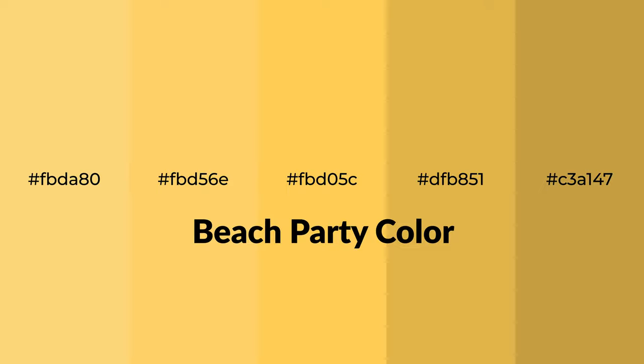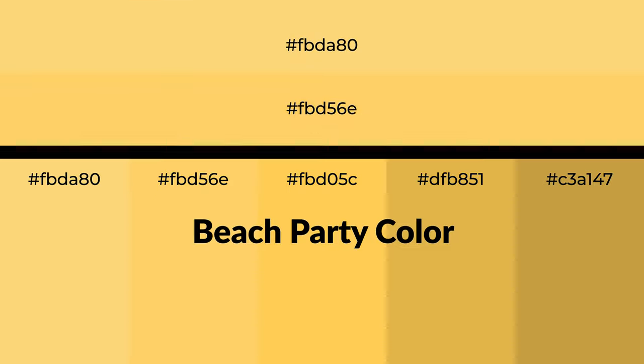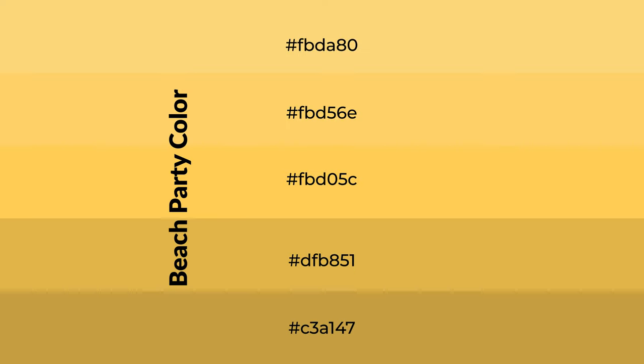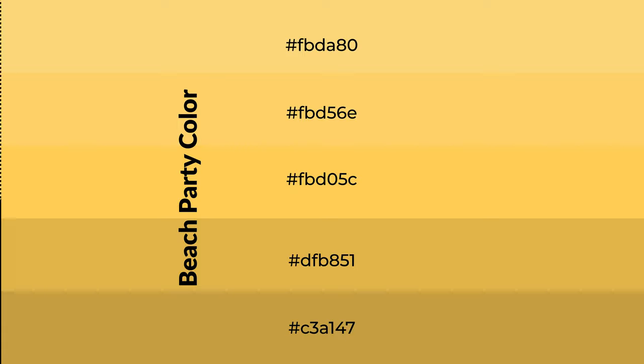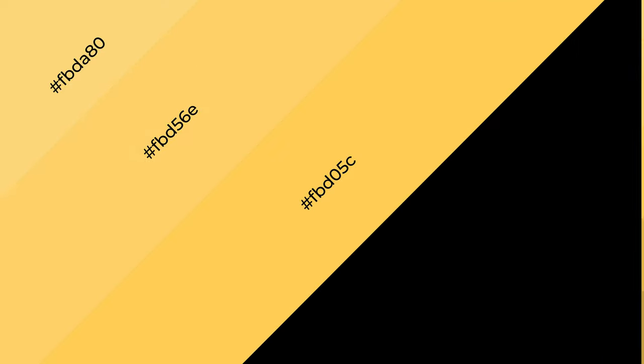Warm shades of beach party color with yellow hue for your next project. To generate tints of a color, we add white to the color. Tints create light and exquisite emotions. To generate shades of a color, we add black to the color, and it is used in patterns, 3D effects, and layers. Shades create depth and drama.